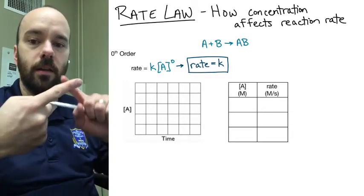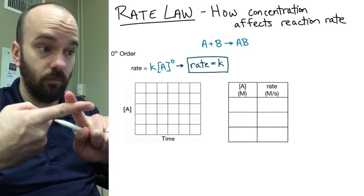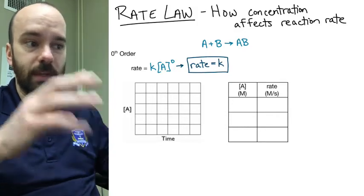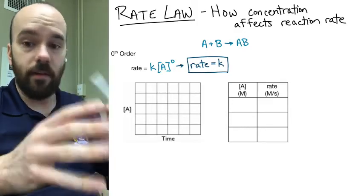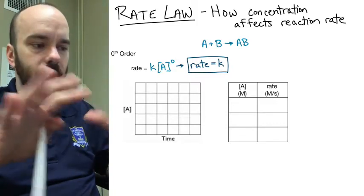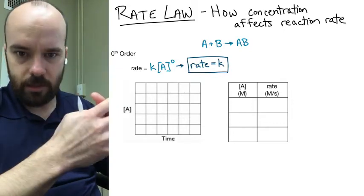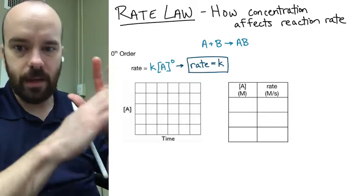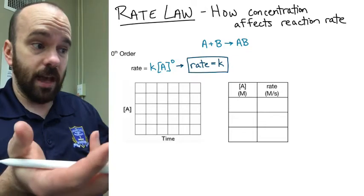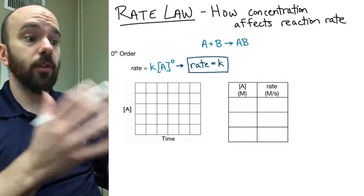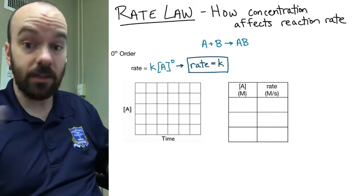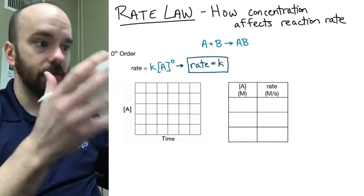K depends on the reaction itself and the temperature. So for this reaction of A plus B giving AB — whether it's hydrochloric acid plus magnesium producing hydrogen gas or whatever — at a particular temperature, K will always be a constant. This means the amount of A doesn't matter. If you have a lot of A or a little bit of A, this reaction is going to take place at the same rate. B's concentration might matter, but for A it doesn't if it's zeroth order.